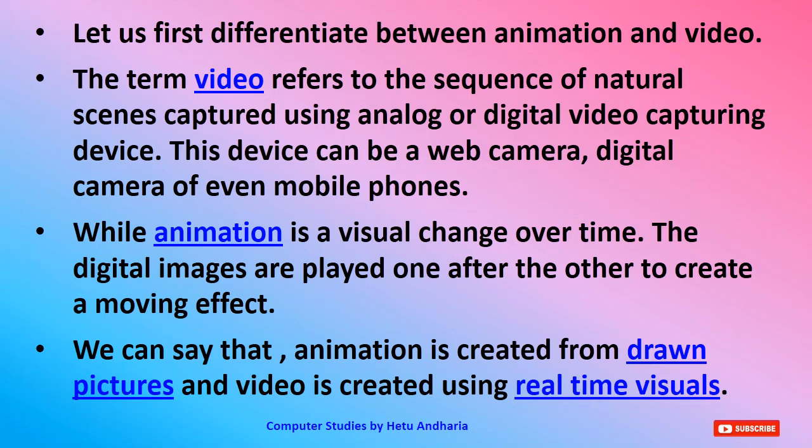Think of Cartoon Network — all those characters are moving, and each character's movement is taking place a minimum of 24 times per second. It's not easy to create an animation. We can say animation is created from drawn pictures, while video is created using real-time visuals.